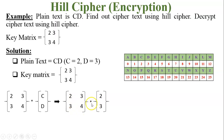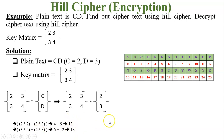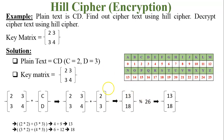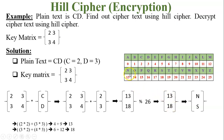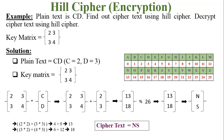Multiply the key matrix [[2,3],[3,4]] by plain text column vector [2,3]. The multiplication gives resultant matrix [13, 18]. Now modulus 26: 13 and 18 are both less than 26, but modulus 26 is mandatory. So the result remains [13, 18]. Converting numbers to characters: 13=N, 18=S. Final cipher text is NS.